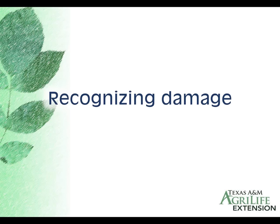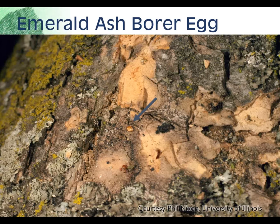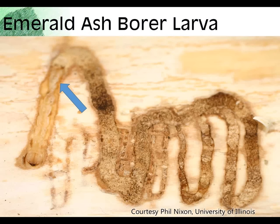How do you recognize emerald ash borer damage? You would not typically see an entrance hole into the tree. If you were very sharp-eyed you might find an egg — an oval, golden-brown object under a plate of bark — but they blend in very well. The female lays eggs under bark during spring months, probably looking for areas of weakness such as broken branches or lightning scars. Borers tend to find those places and lay their eggs near them.